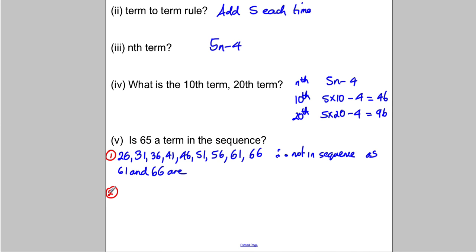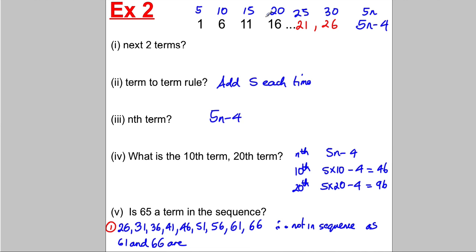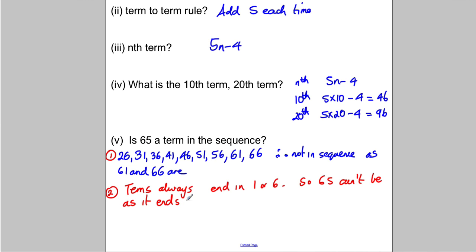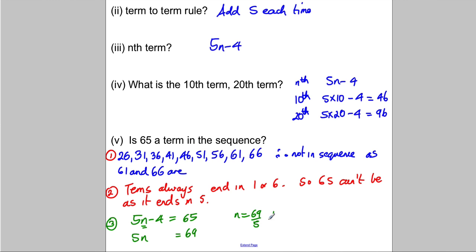Here's a really neat way: if you spot that the original sequence terms always end in 1 or 6, then 65 can't be in the sequence as it ends in 5. That saves a lot of work — look out for that trick. The third method is algebra: let 5n subtract 4 equal 65, so 5n equals 69, and 69 is not divisible by 5, so n is not a whole number. Therefore 65 is not in the sequence.